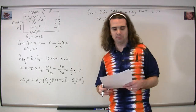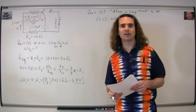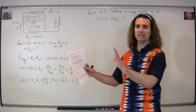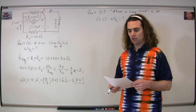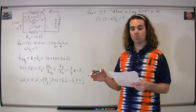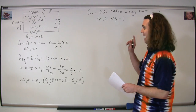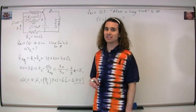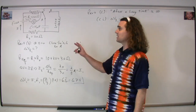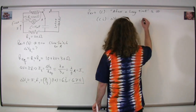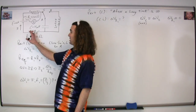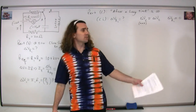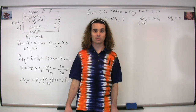Part C: after a long time — meaning as long as we need, essentially infinitely long — the potential difference across the capacitor is going to be at its maximum value, which means it's going to be equal to the potential difference across the battery. Because the capacitor is fully charged, there will be no current flowing through the circuit. If there's no current, there's no electric potential difference, so the electric potential difference across resistor 1 is equal to zero.